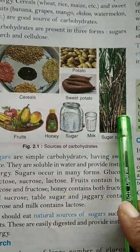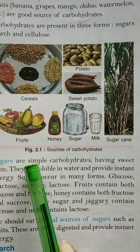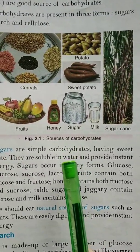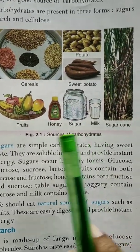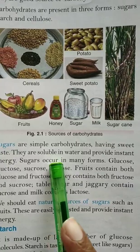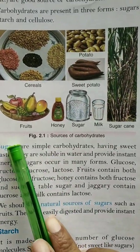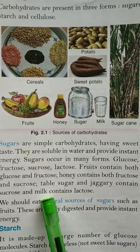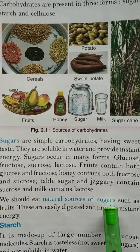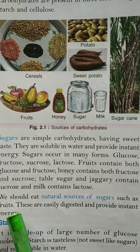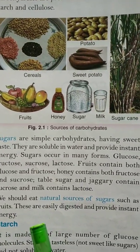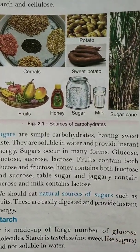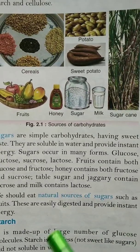Carbohydrates are mainly of two types. The first one is sugar. Sugar is a simple carbohydrate. It is sweet in taste and we get it from sugar, jaggery, and milk. Natural sources of sugar include fruits. That is why when we need energy, we eat fruits or chocolates so that we get instant energy.